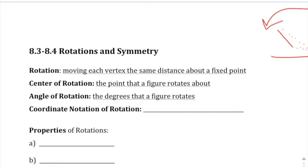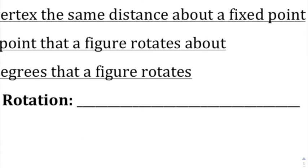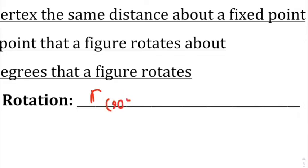Angle of rotation is just the number of degrees that you rotate something. Here's your coordinate notation for rotations. Like yesterday, you're going to use an R, but since a big R could mean reflection or rotation, for rotations you're going to use a lowercase r. Then you write, for example, 90 degrees — you write that a little small — and then what you're rotating around, so O for the origin.